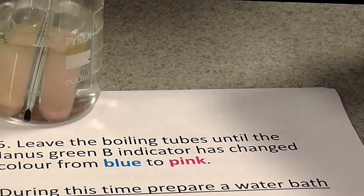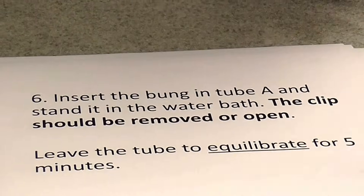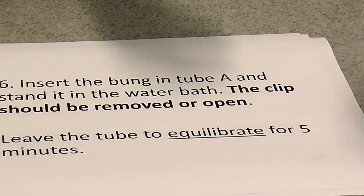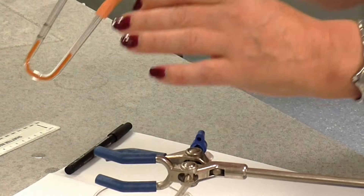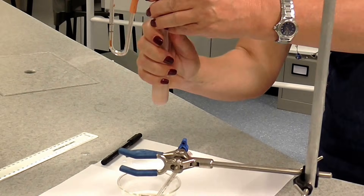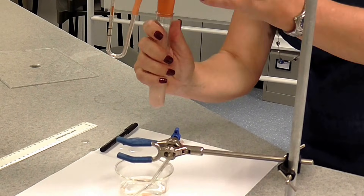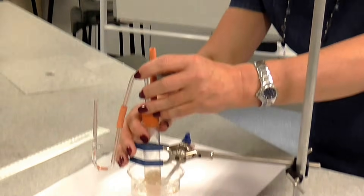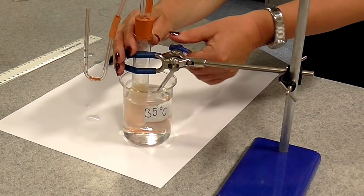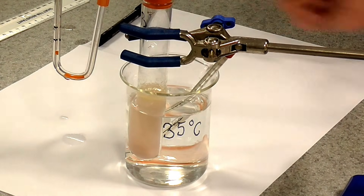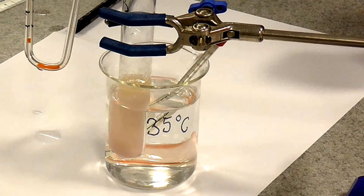It's time to actually do the investigating. Take one of your tubes — I'm going to take tube B — and insert the bung into that tube. At this stage, make sure the clip is open, and stand it in your water bath. Leave it a couple of minutes to equilibrate, making sure the temperature inside the tube is at 35 degrees, the same as the water bath.